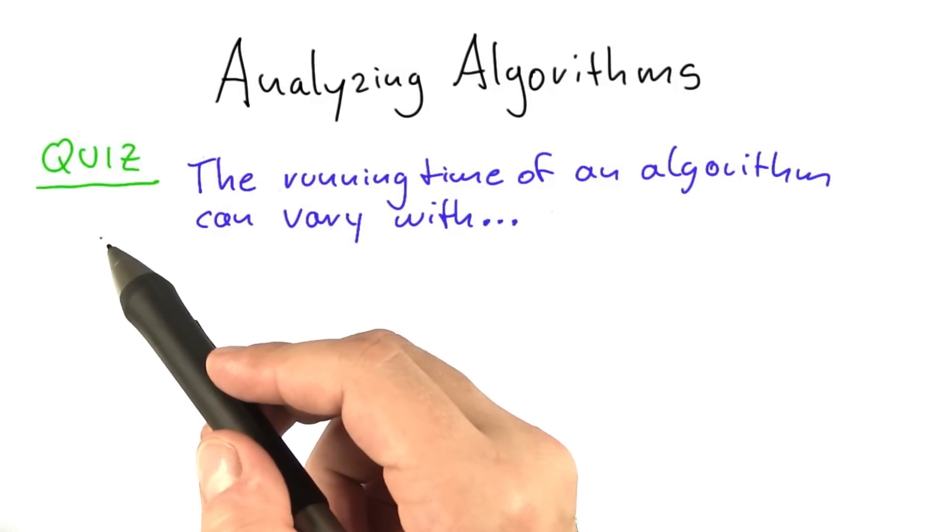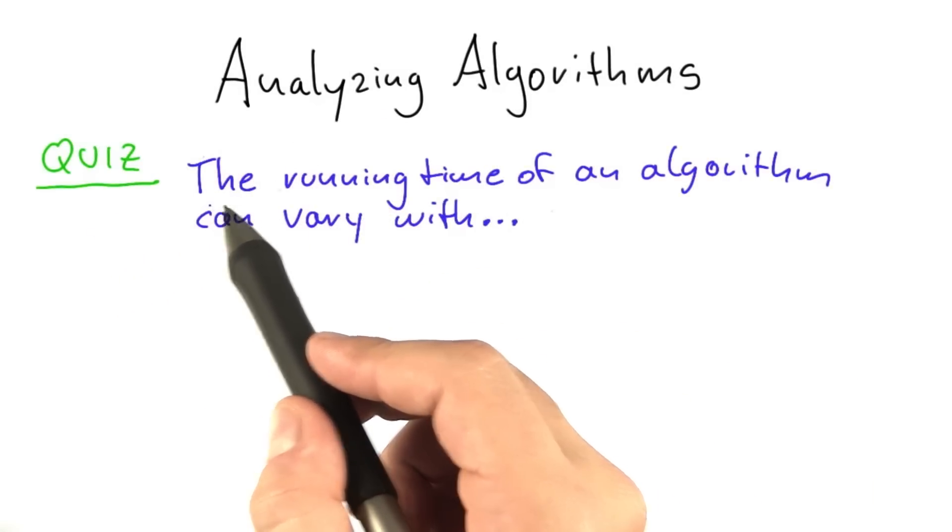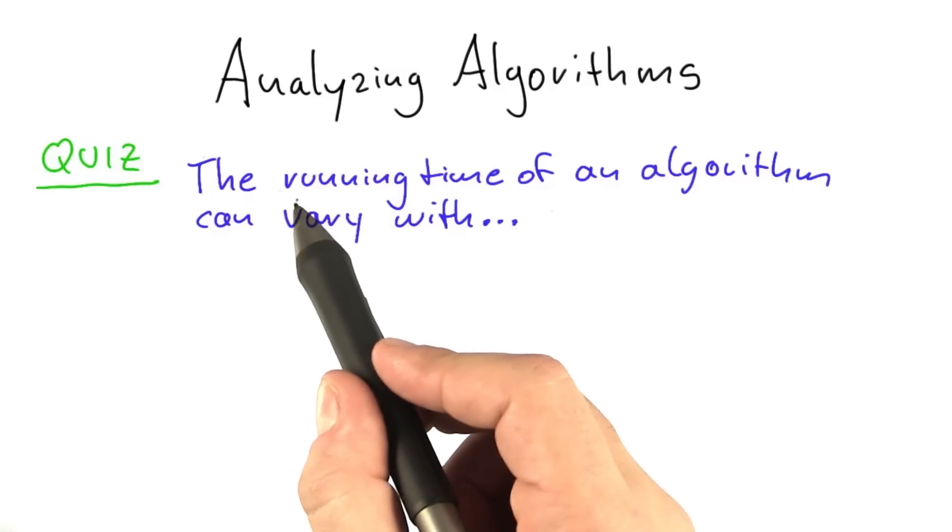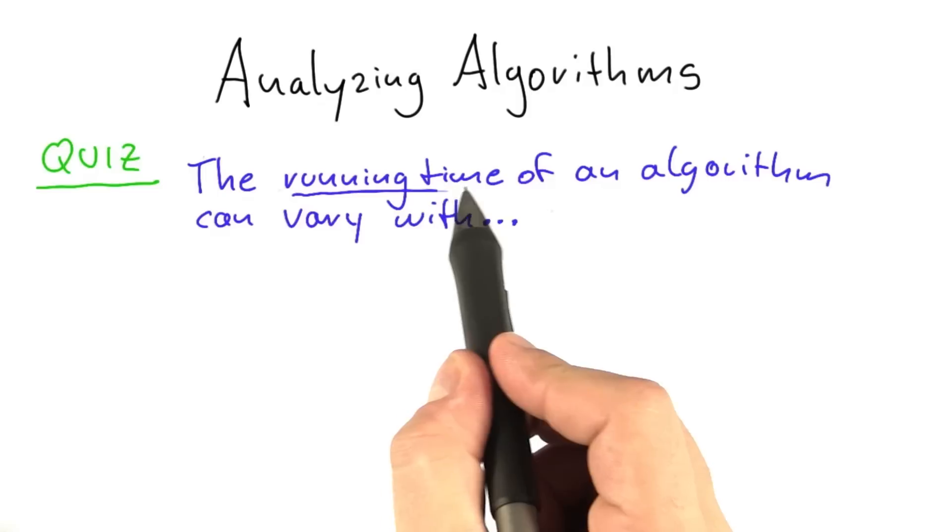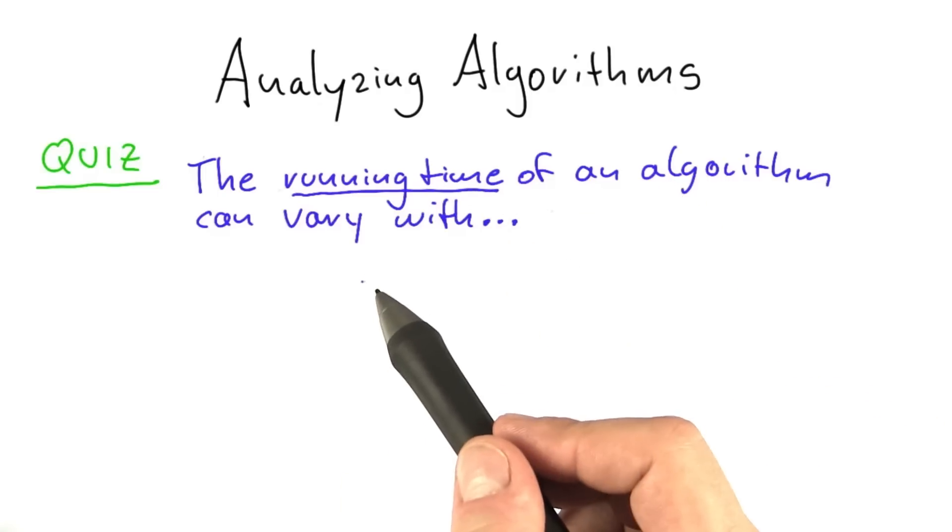So let's start out with a little quiz. What I want you to think about is the various factors that we need to take into account when we are analyzing an algorithm or, more precisely, when we are analyzing the running time of an algorithm because that will depend on a number of factors.